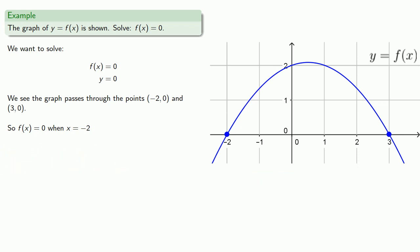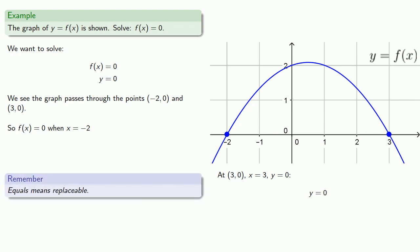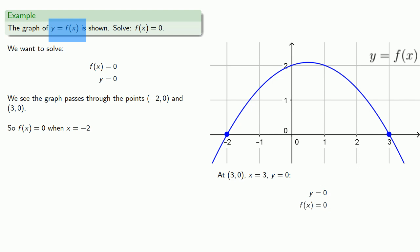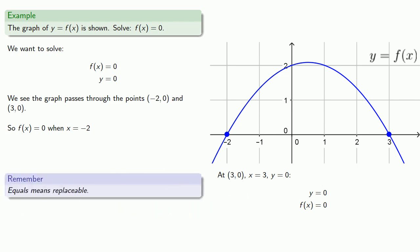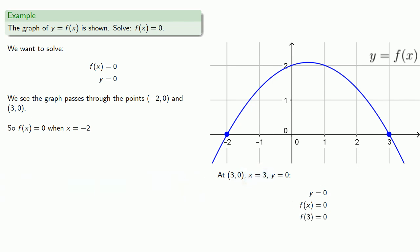But there's more — the second point is 3, 0. At that point, x equals 3 and y equals 0. Since equals means replaceable and y equals f of x, we can replace y with f of x to get f of x equals 0. Then replacing x with 3, we get f of 3 equals 0. So x equals 3 also solves f of x equals 0, giving us a second solution.